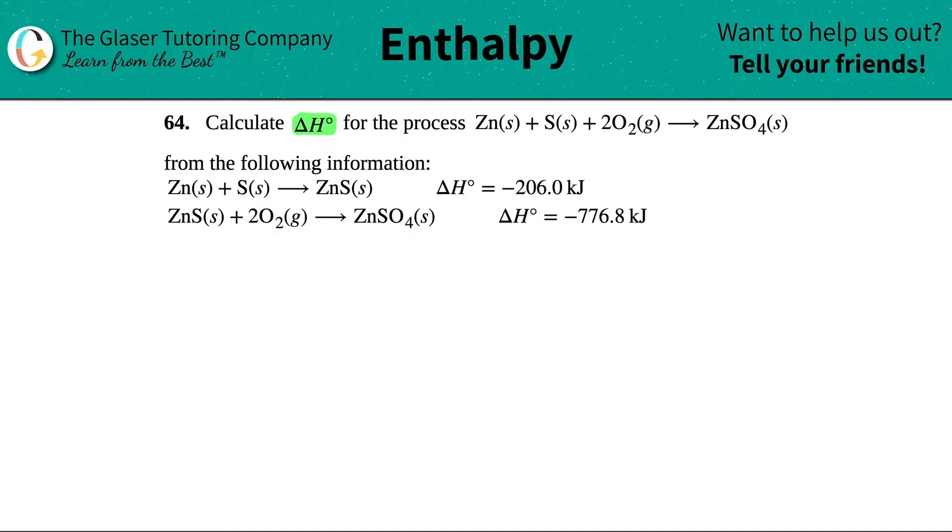So this is a Hess's law problem. The first thing we're going to do for Hess's law - remember, Hess's law is just combining your two equations in order to get the equation that you want. So I'm going to say I want this equation. I'm going to strip away the states because all I care about is the number and the substance. So Zn plus S plus 2 O2 yields Zn SO4.